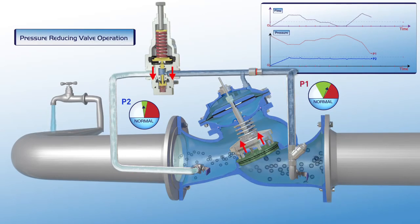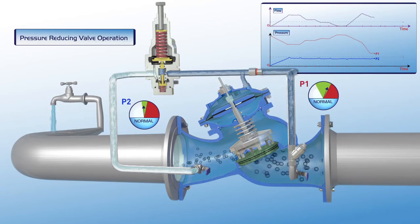Flow through the valve is constant, P1 upstream pressure is reduced to its regular green zone settings, and P2 downstream pressure remains stable.